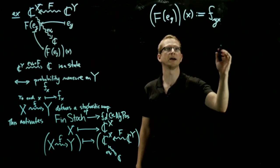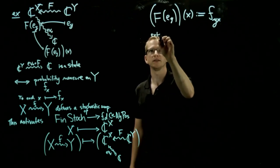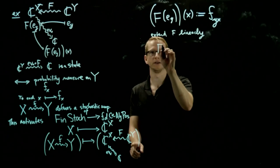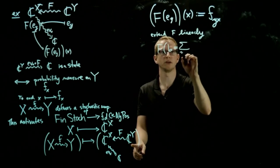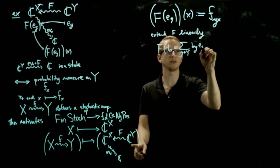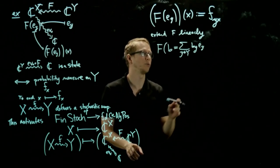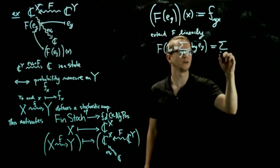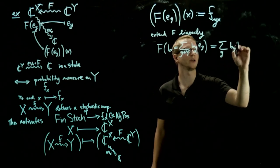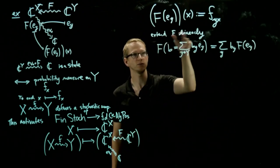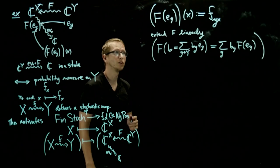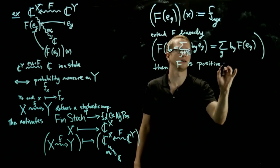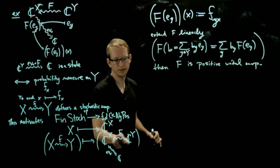This turns out to be a positive unital map. So if we extend F linearly — meaning if you take any function, every function can be decomposed by looking at the values it takes for each element y — we define this to be the sum over all y, leaving the coefficients alone and applying F to each term. So extending F linearly gives us F as a positive unital map from C(Y) to C(X).